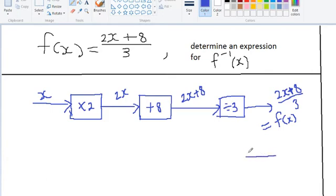So beginning from the right hand side, this is where we will have our input now. And the first operation is the opposite of divided by 3, which is multiplied by 3. And so when we multiply x by 3 we get 3x.